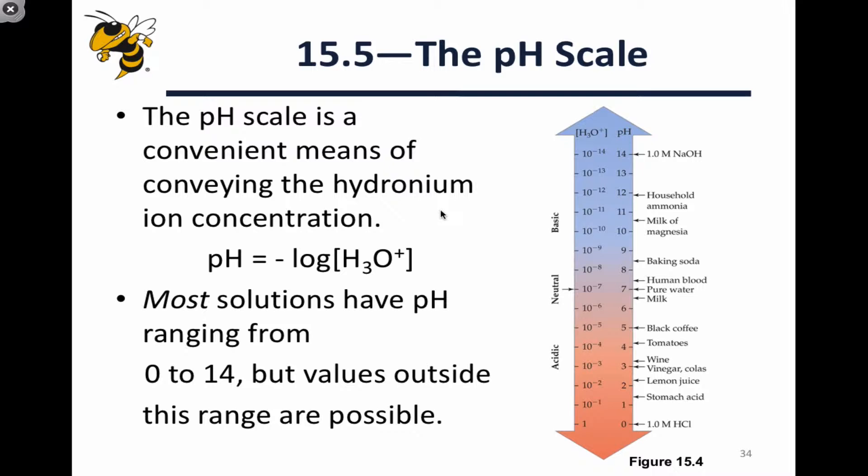It can vary from 10 to the negative 14, and even smaller than that, all the way up to something like 1 mole per liter, or even larger. With a range of concentrations this large, we're going to be dealing with exponents most of the time, right? And exponents are a pain to deal with.